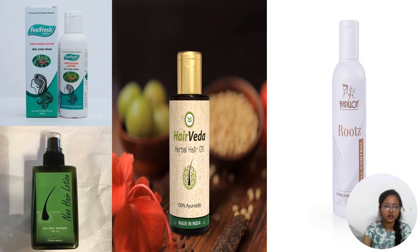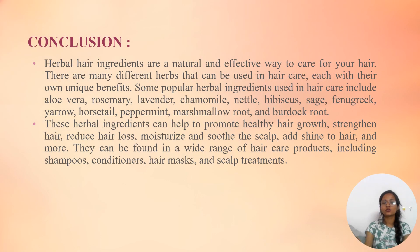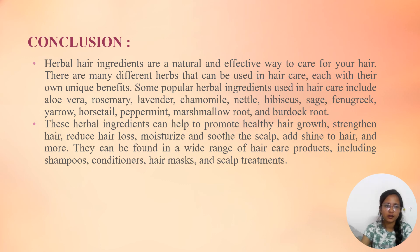Some examples of hair lotions are Filthrace, Hair Veda, Roots, and Neo hair lotion. In conclusion, herbal hair ingredients are a natural and effective way to care for your hair. There are many different herbs that can be used, each with their own unique benefit. Some popular herbal ingredients used in hair care include aloe vera, rosemary, lavender, chamomile, nettle, hibiscus, sage, fenugreek, horsetail, peppermint, marshmallow root, and burdock root. These herbal ingredients can help to promote healthy hair growth, strengthen hair, reduce hair loss, moisturize and soothe the scalp, add shine to hair, and more. They can be found in a wide range of hair care products including shampoo, conditioner, hair masks, and scalp treatments.